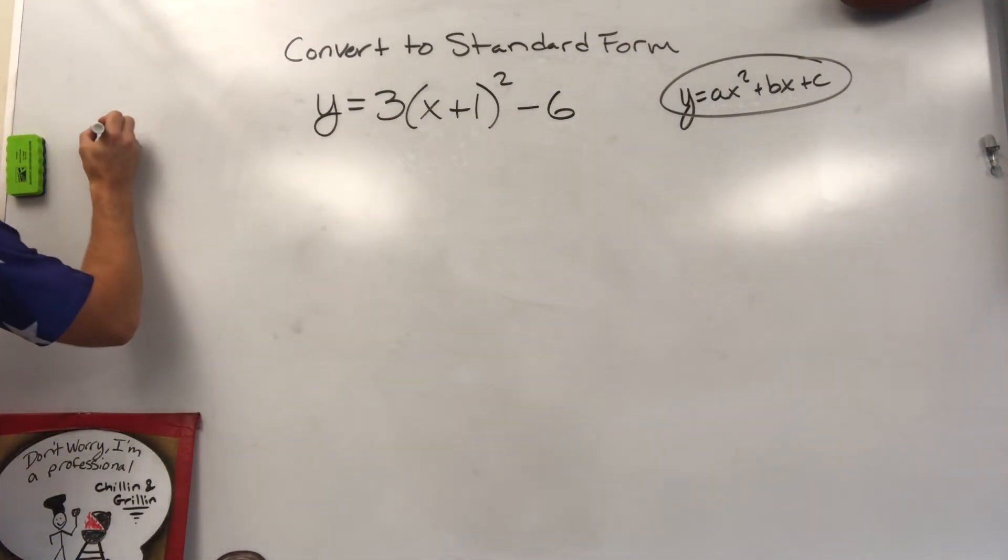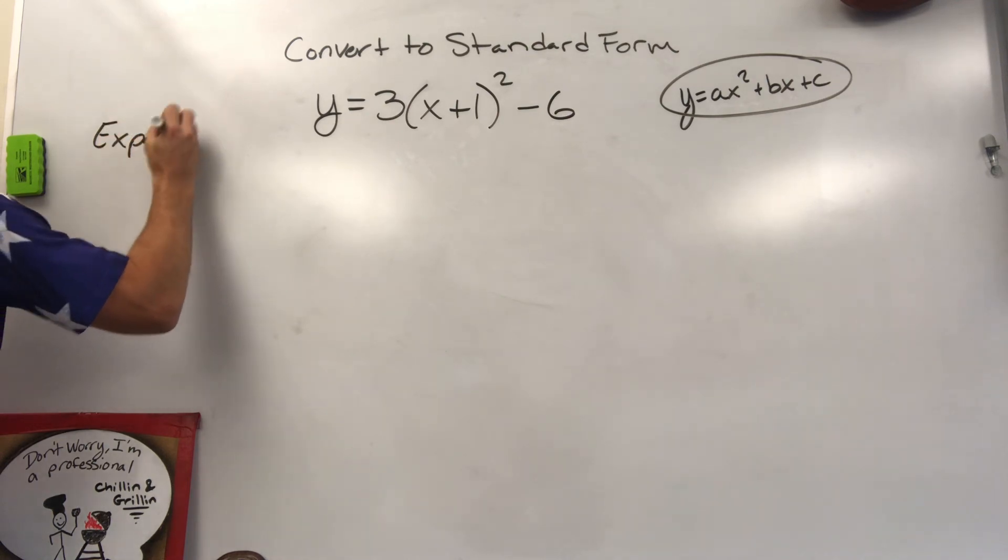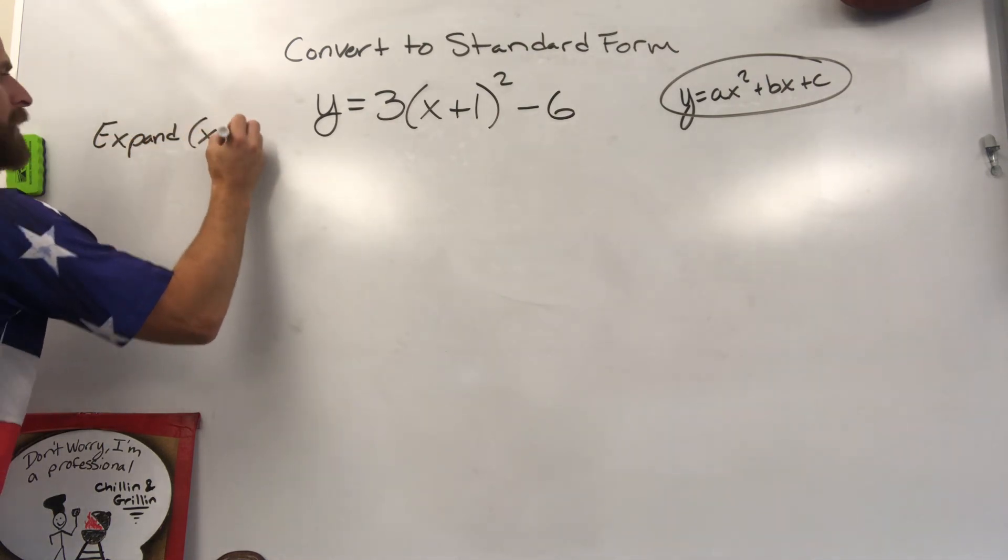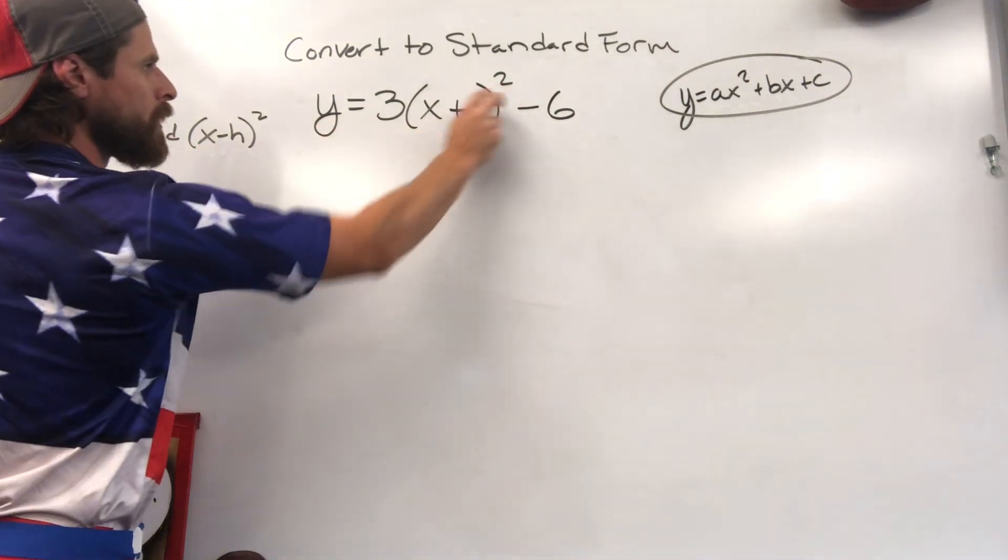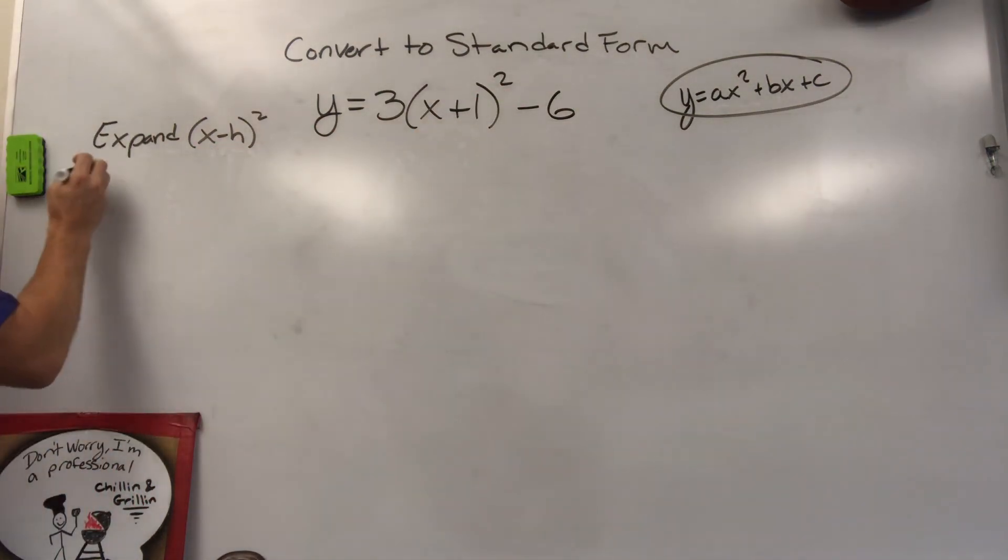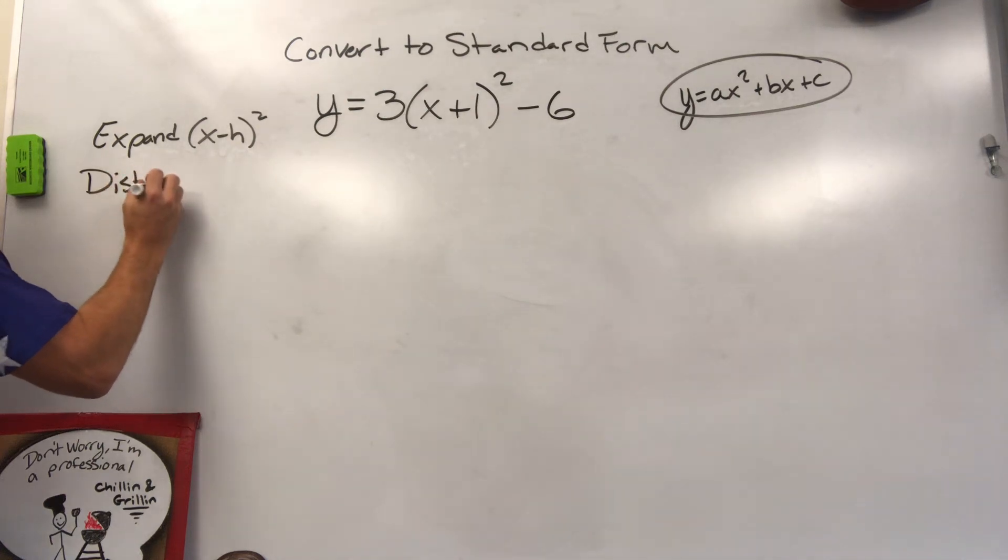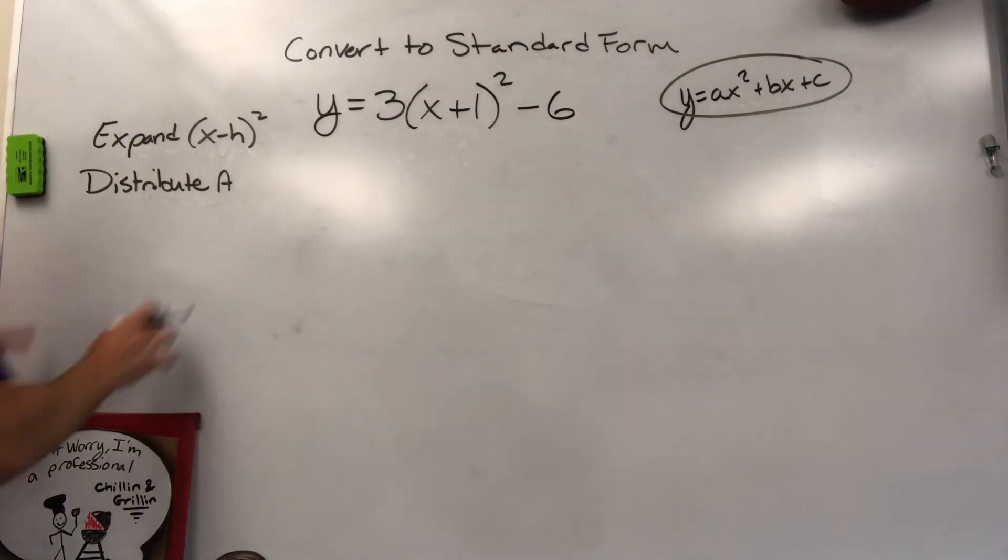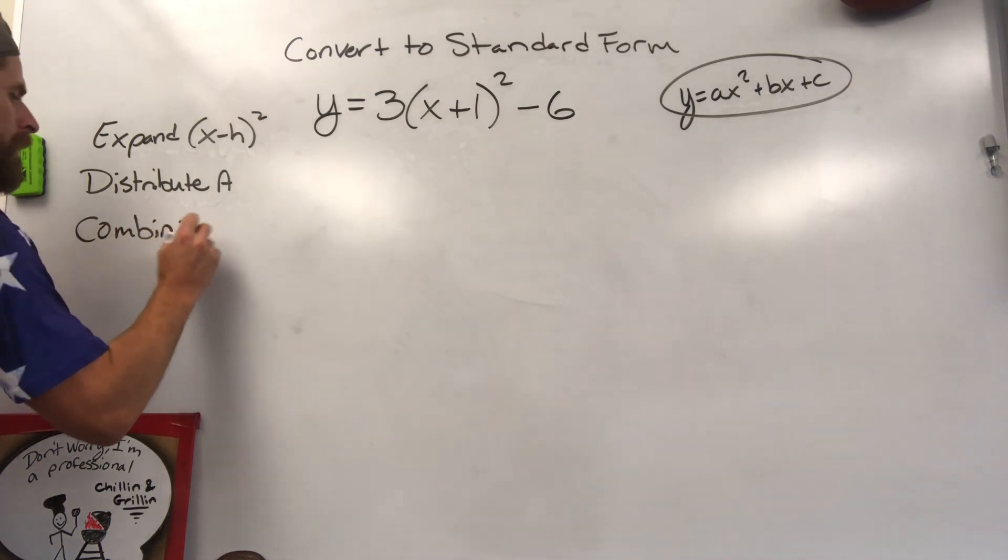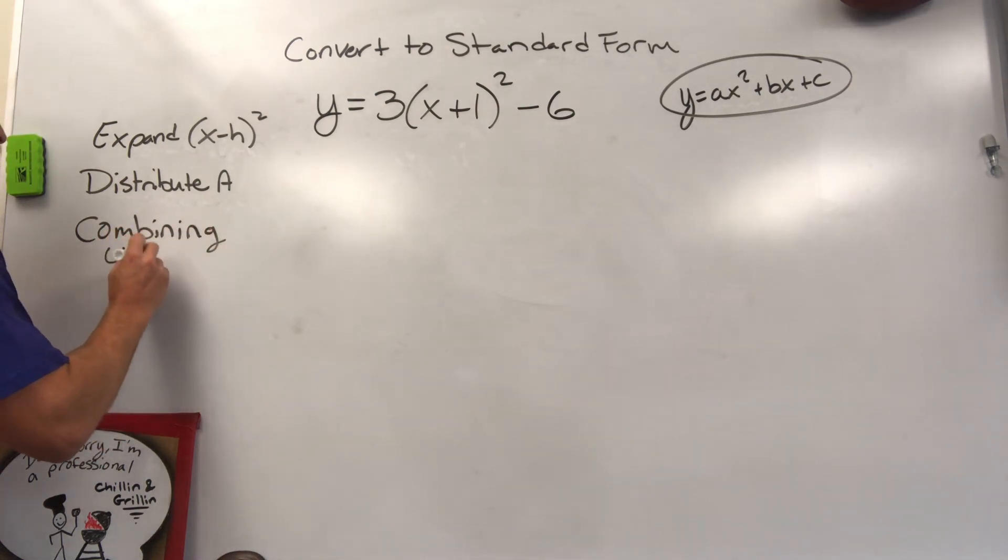Okay, step one, you need to expand the square. That would be x minus h squared when it's in vertex form. You see it right here. We'll need to expand that. After that, we're going to distribute a. A is this term in front. It'll need to distribute to the parts that we get. And then after that, we'll finish it by combining like terms.